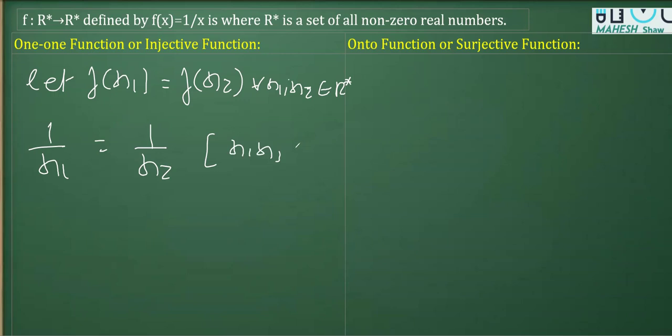By cross multiplication we get x1 equals x2. Hence, it is one-to-one.